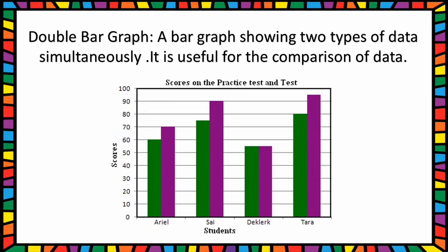Vertically, scores are written; horizontally, students' names. Scores on the practice test and the test. Arial scored 60 marks in practice test and 70 marks in test, so Arial scored 10 marks more in test. This is the comparison of practice test and test. Psi scored 75 marks in practice test and 90 marks in test, so Psi also scored more marks in test.